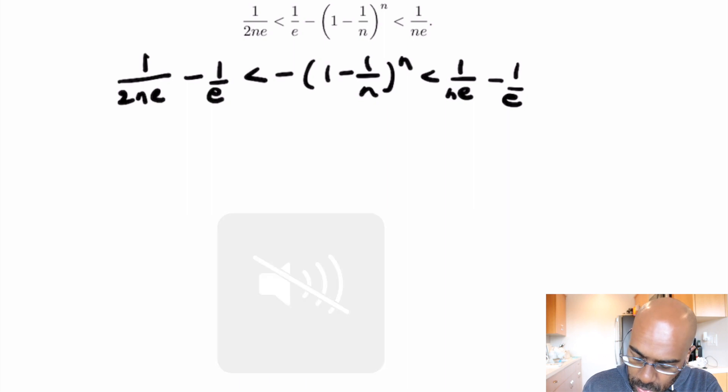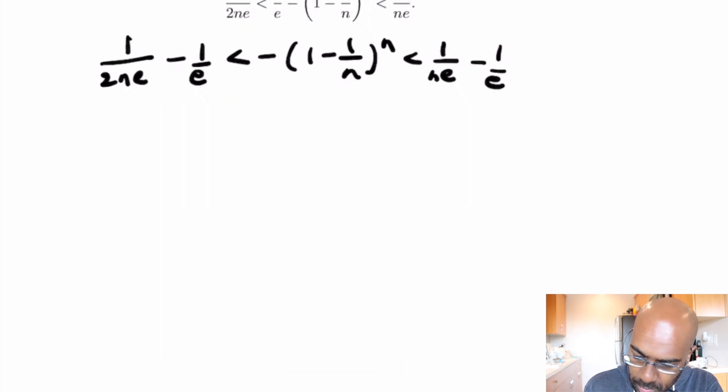Alright, so let's now multiply by this negative sign right over here. The reason to do that is the quantities that we have on the left and the right, 1 over 2ne minus 1 over e and 1 over ne minus 1 over e, are both negative. The reason being n is greater than 1.